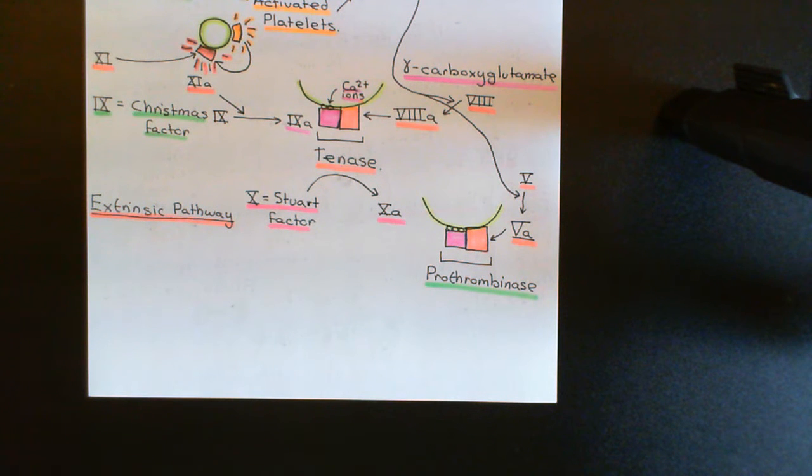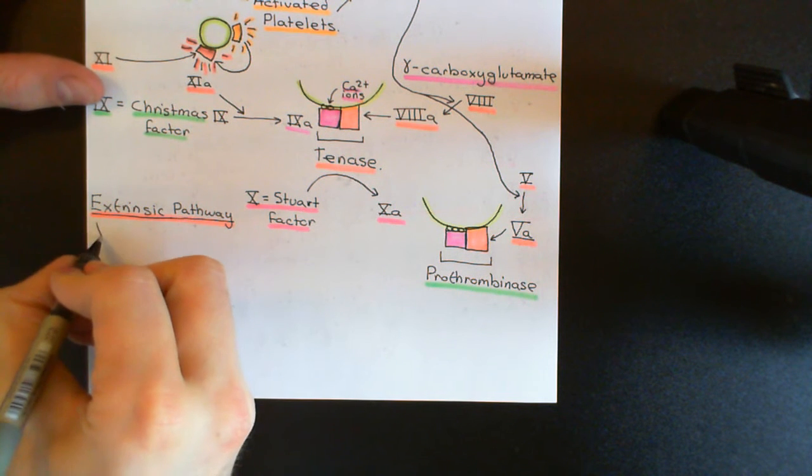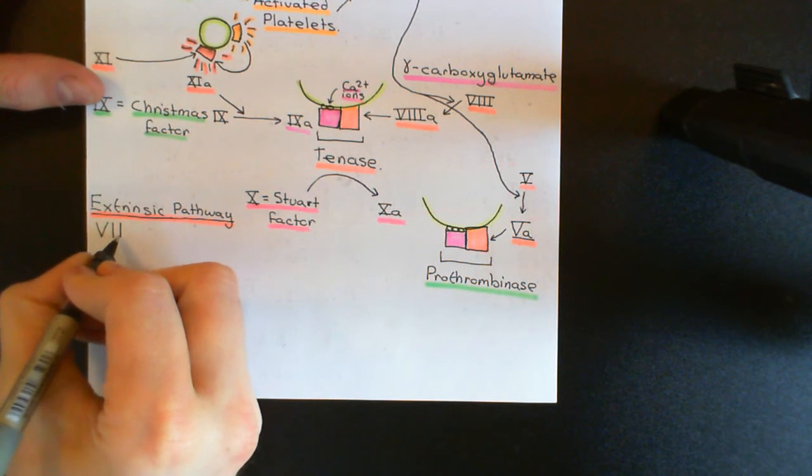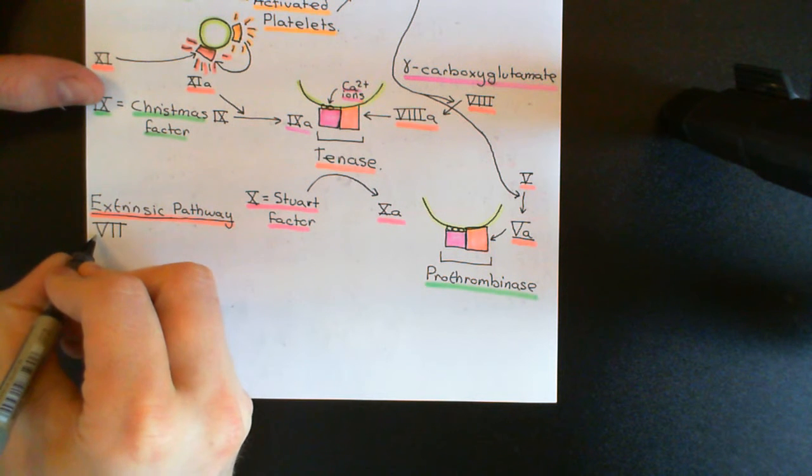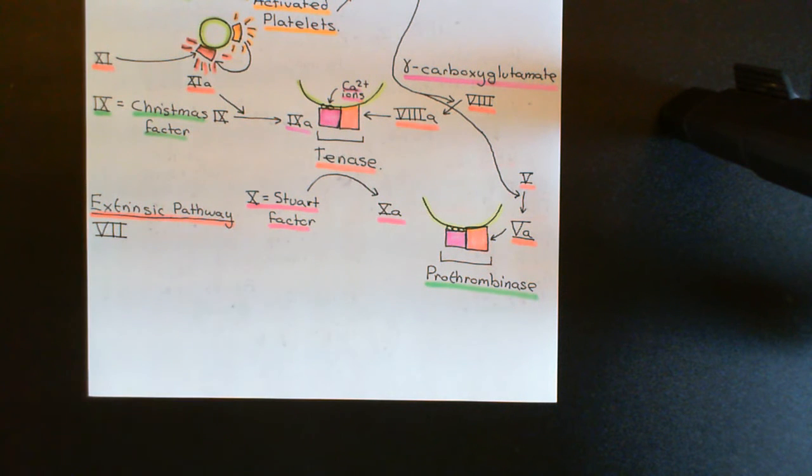Well, the extrinsic pathway is going to be initiated when coagulation factor 7 comes into contact with a coagulation factor that it would never normally be allowed to see. And this one is one of the few ones that isn't actually produced by the liver and secreted into the bloodstream. Instead, it's produced by all cells all around the body.